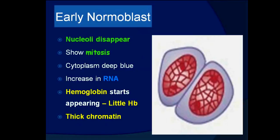In the early normoblast, nucleoli disappear, mitosis is seen, cytoplasm is deep blue with increased RNA, and hemoglobin starts appearing for the first time in the series. Thick chromatin is also an important feature of the early normoblast.